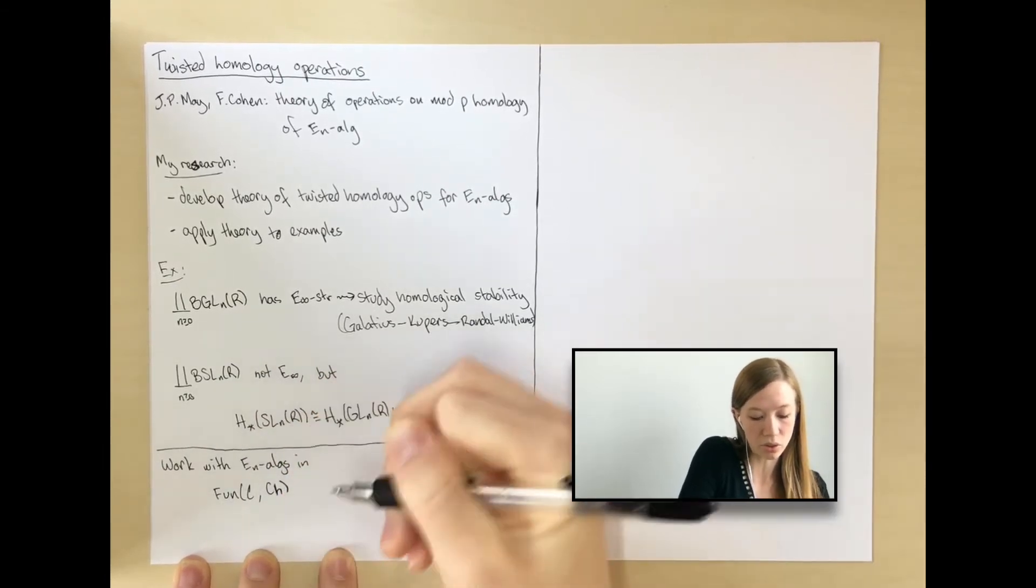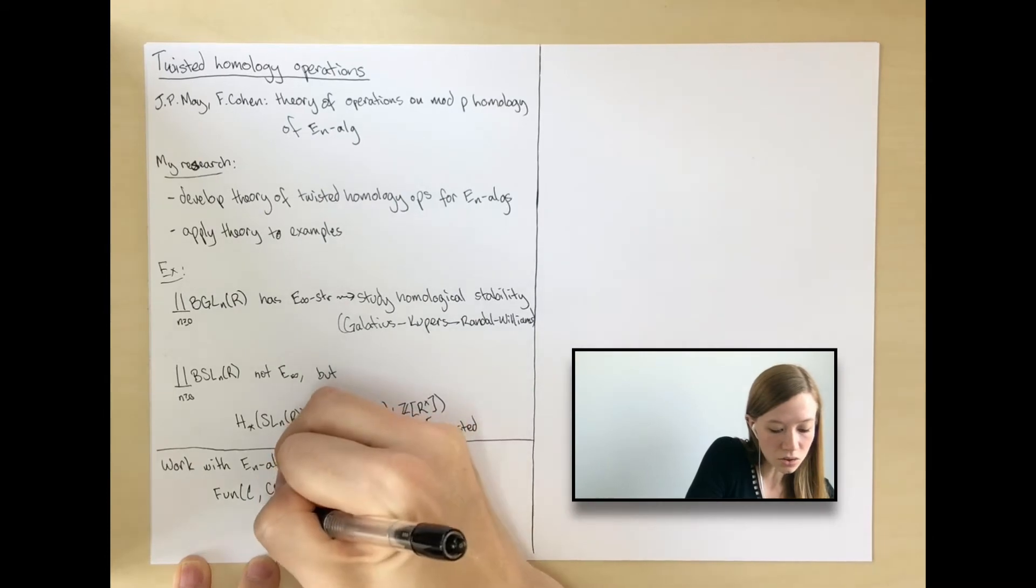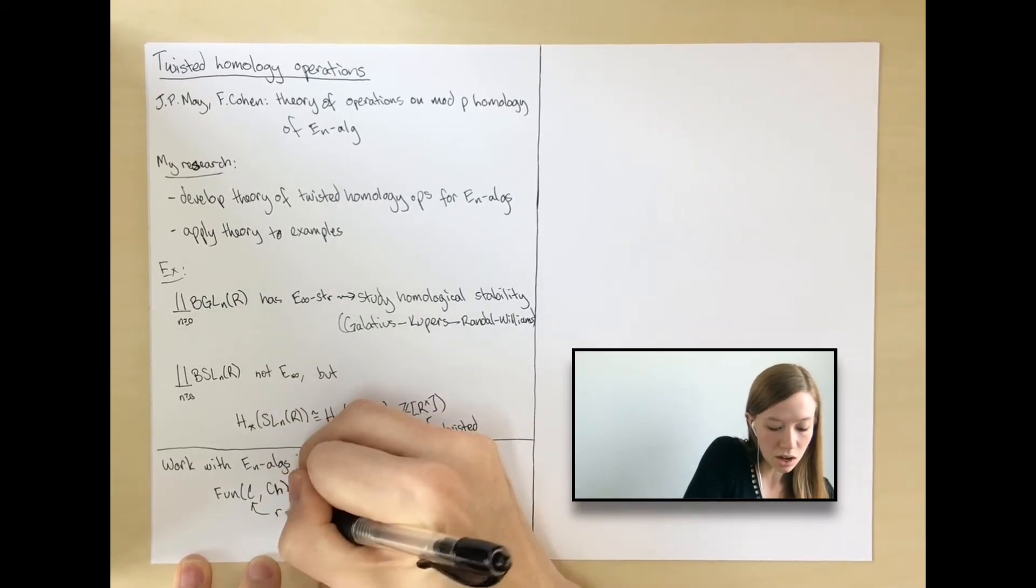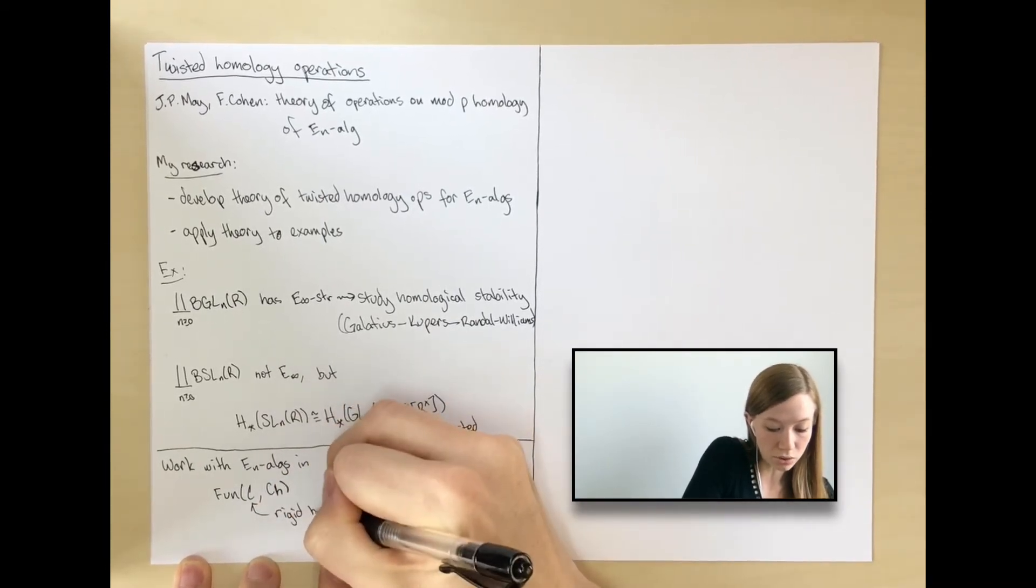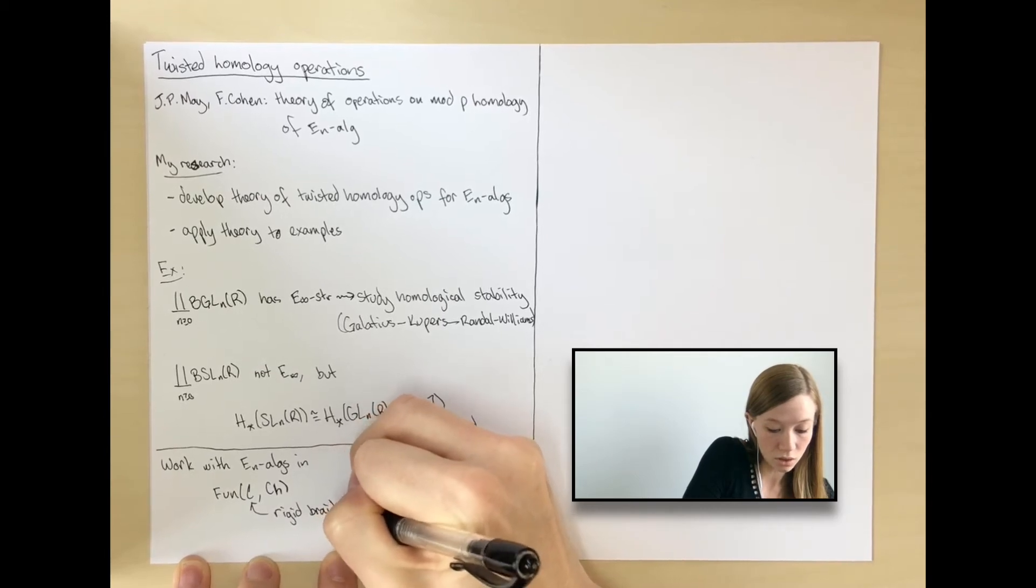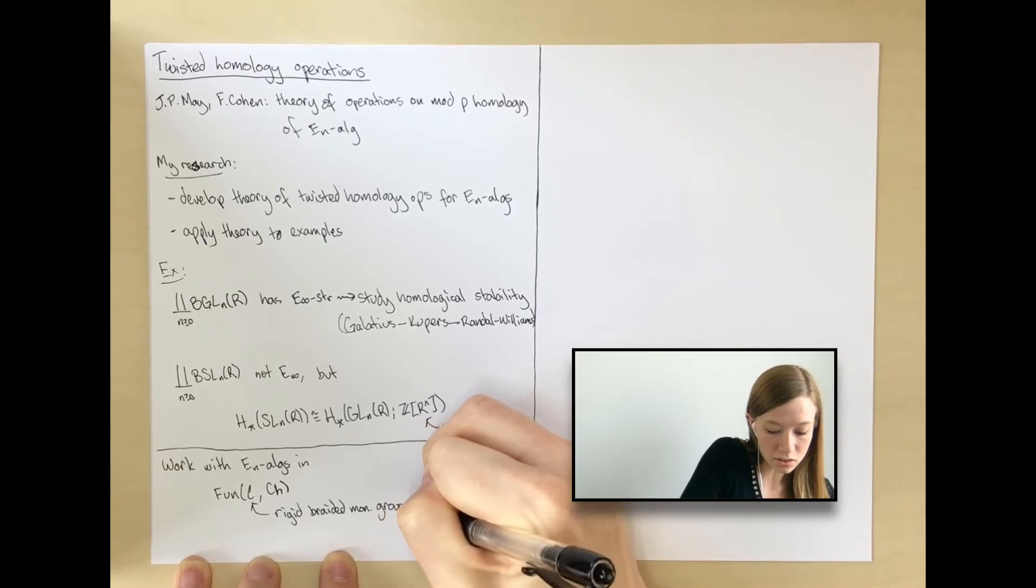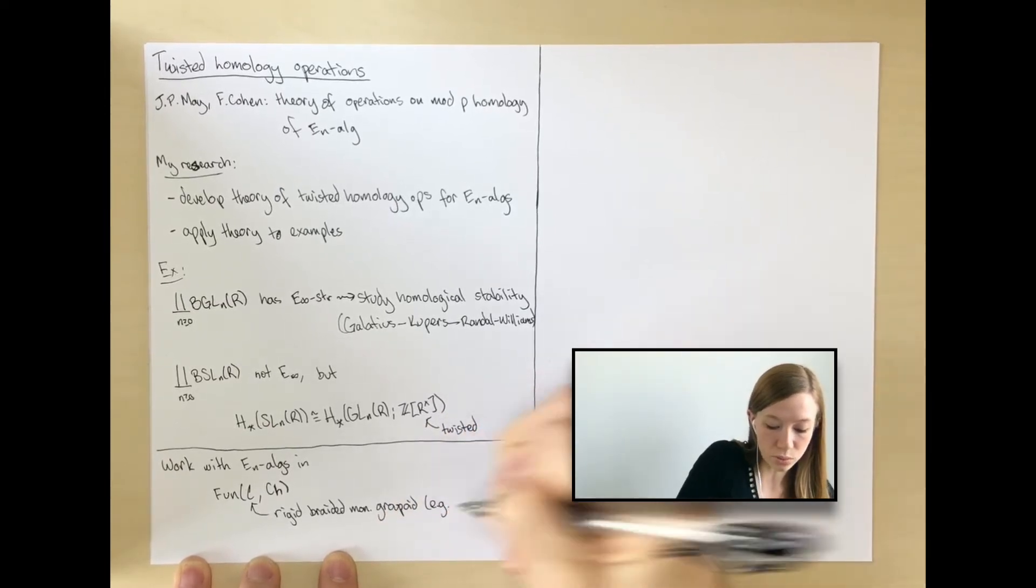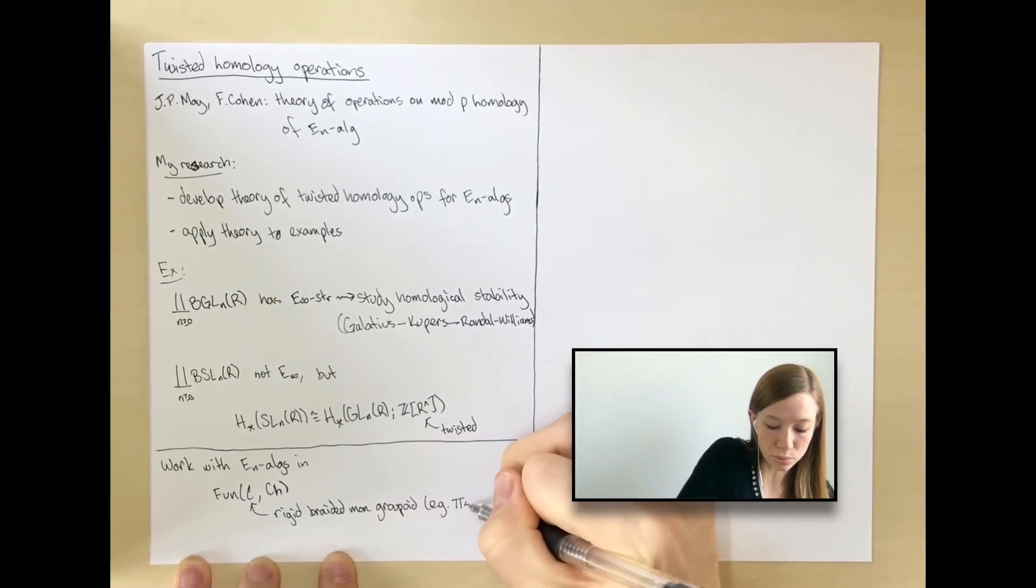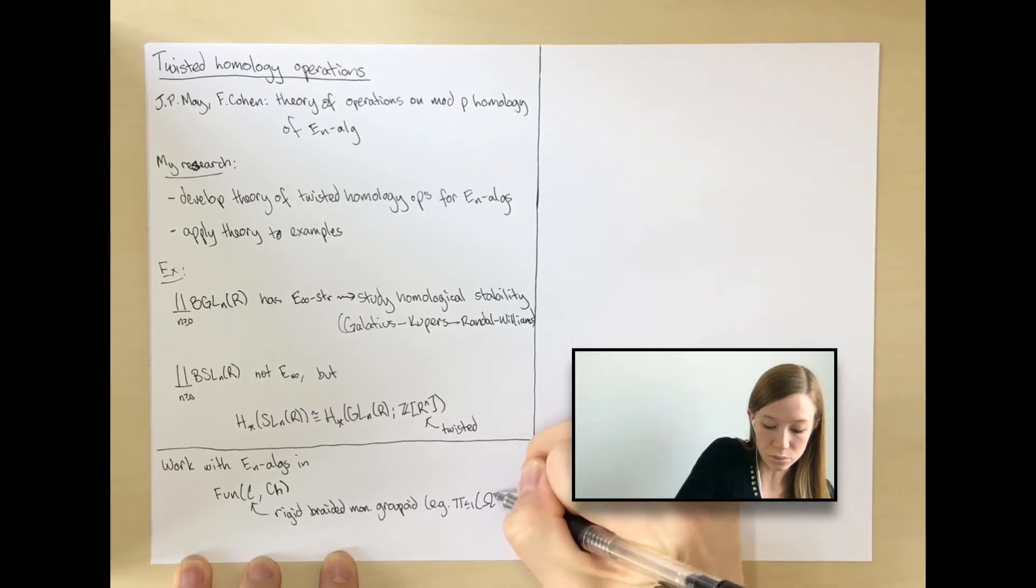So the category of functors from some category C into chain complexes—you can work with other categories here. This category C is a rigid braided monoidal groupoid. I won't say what that is, but you can keep in mind the example of when C is the fundamental groupoid of an n-fold loop space.